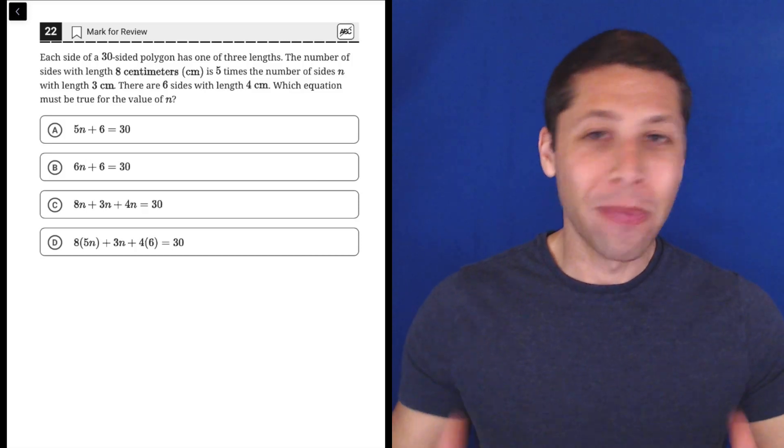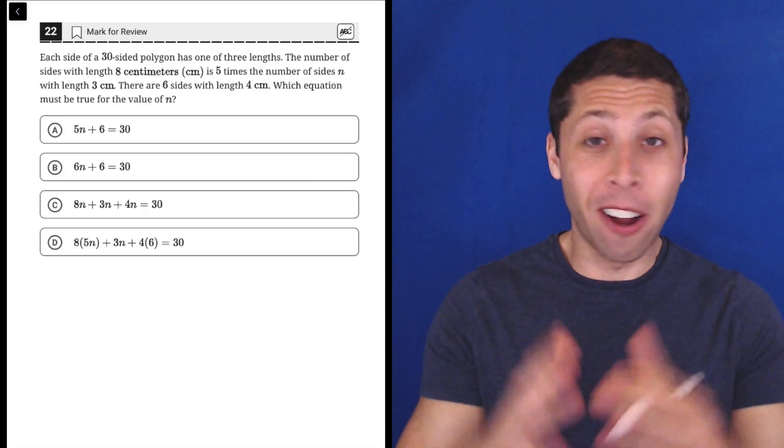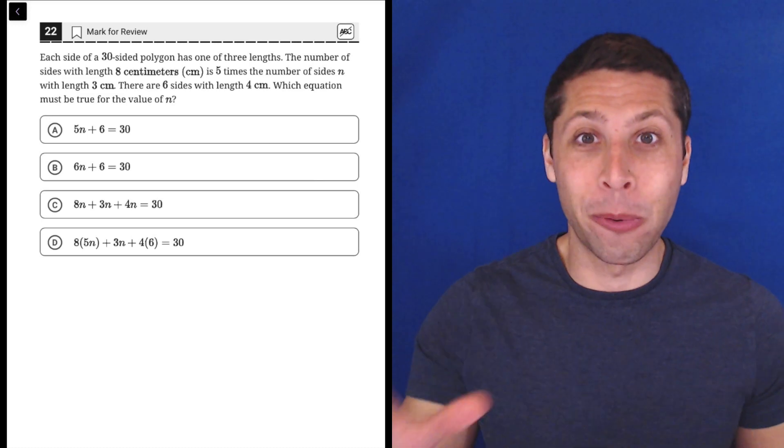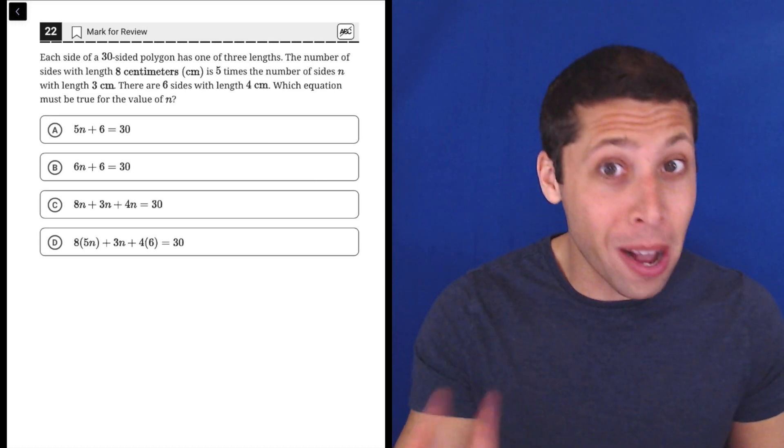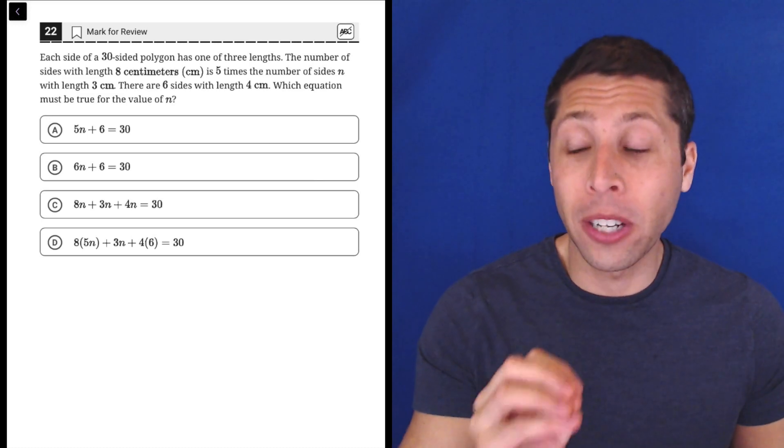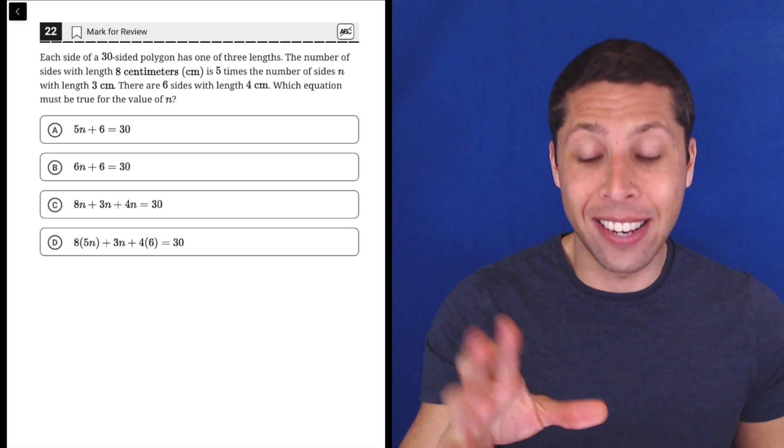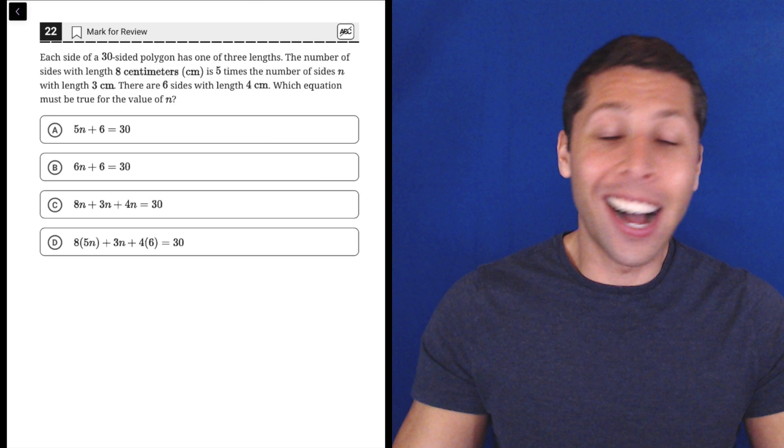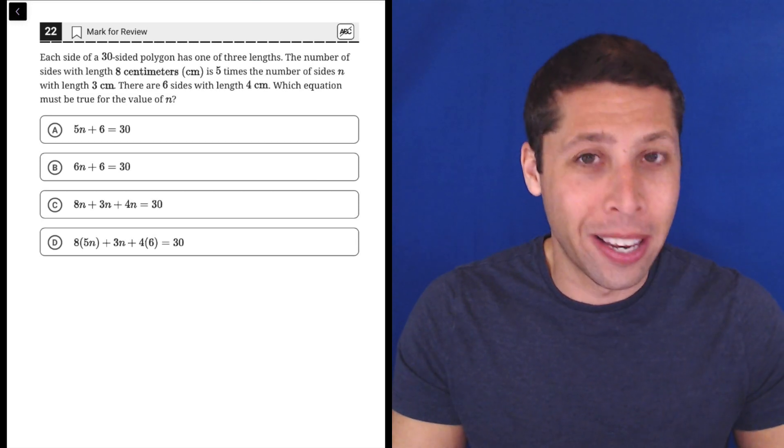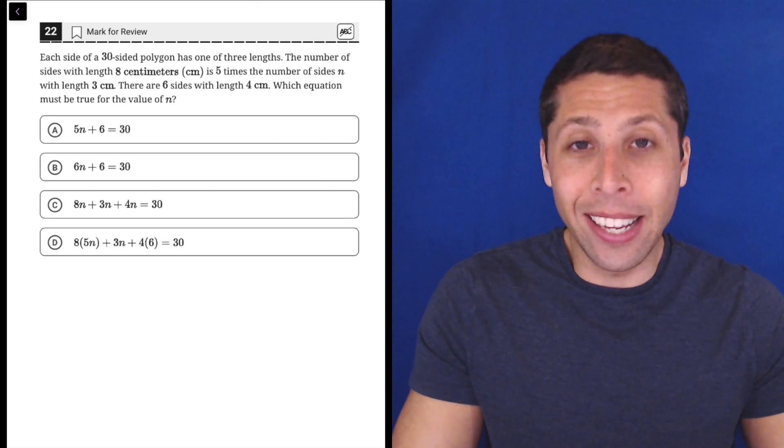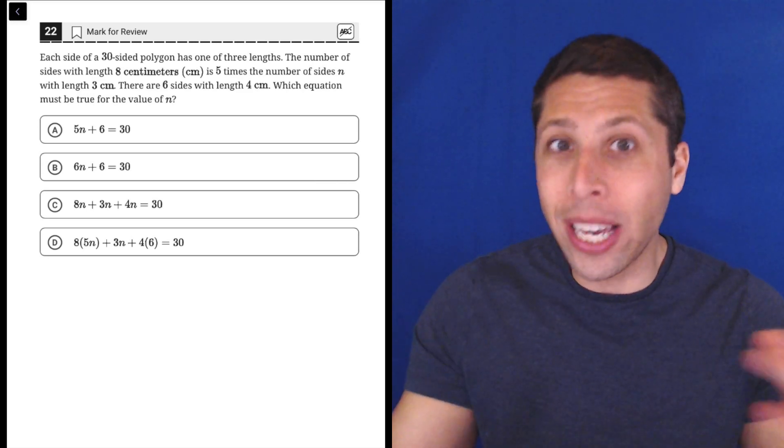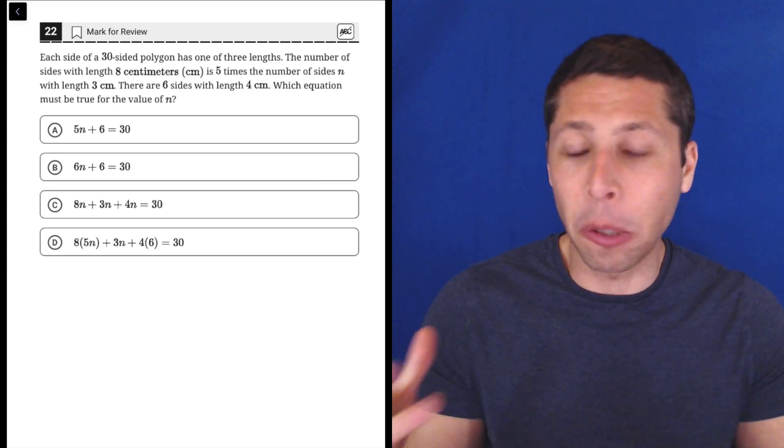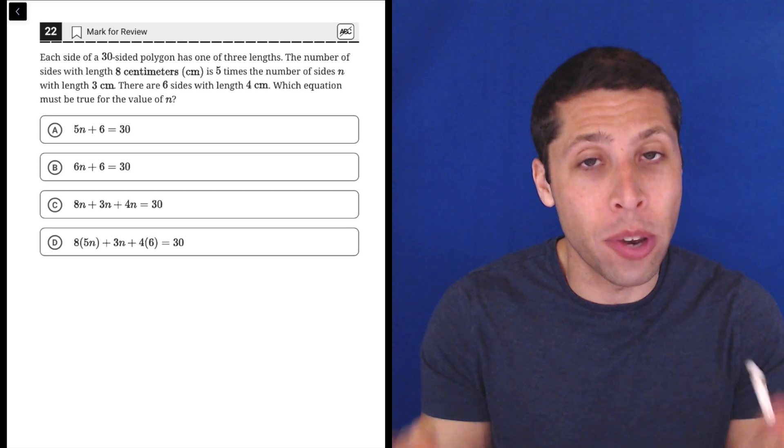Alright, so this is number 22, supposed to be the hardest question on the test probably in terms of math. We're at the last question in the hard module. They're in order of difficulty, so it's supposed to be the hardest one, and it's in the hard module. So there you go, double hard. I actually think this is much easier than number 21. And this goes to show that as you get to the end of the section, what is hard is kind of relative a little bit to you and to the strategies that you know.